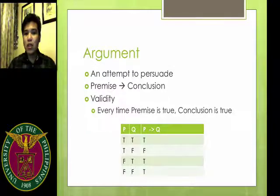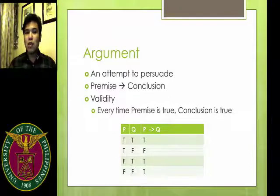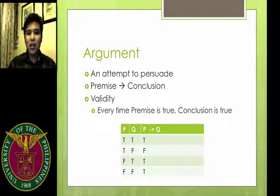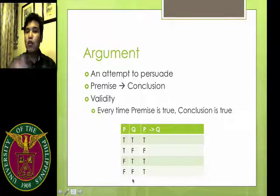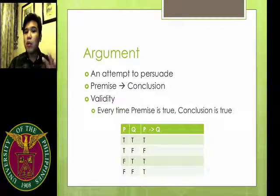Before we proceed with the details, I want to first define what an argument is. An argument is an attempt to persuade. It has two parts: the premise and the conclusion. Looks familiar? Of course, because this is just an implication. So how do you say that an implication is valid? Do you remember the truth table for an implication? For an implication, for every true premise, there should be a true conclusion. The only time that an implication becomes false or becomes invalid is if the premise is true and the conclusion is false.